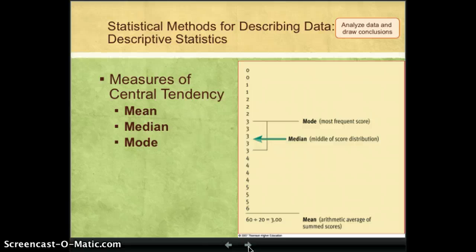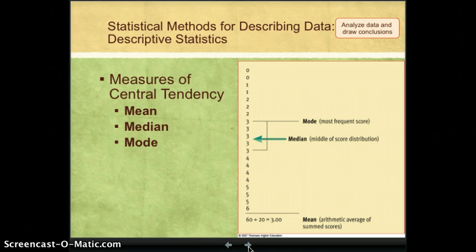The mode is the most frequently occurring score. In this case, three was most frequently occurring. You could have a bimodal distribution. If equal numbers of people scored three and four, we would have two modes. The median is the exact middle score. If we lined up the scores, lowest to highest, and then kind of counted from each end towards the middle, that would be the median.